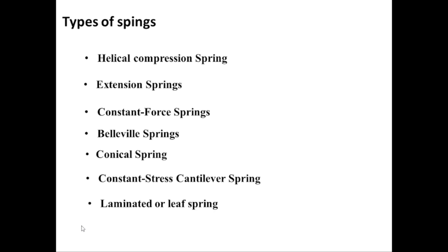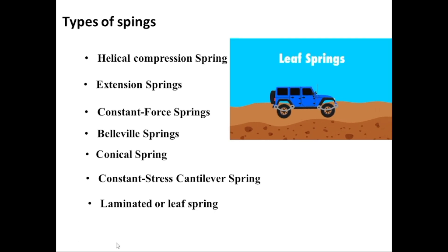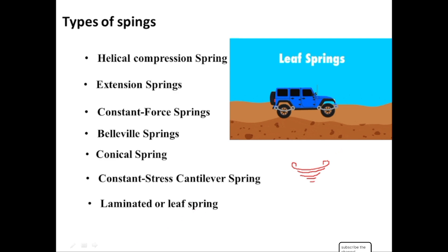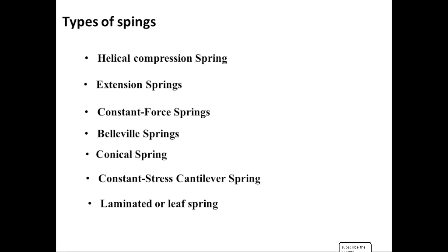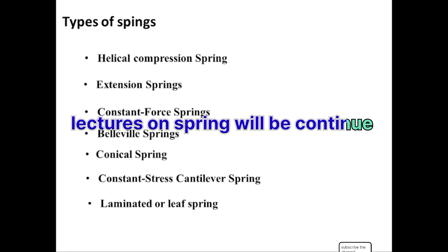Another type is the laminated or leaf spring. This spring is used to take the load of heavy vehicles. In this animation you can see laminated springs used to take the load of a car. One leaf spring is on top, below which there is a series of leaf springs with gradually decreasing lengths, allowing some deflection. Another animation shows a car moving over a bumpy road using these laminated springs. Our lectures on springs will continue — stay with us, thank you.